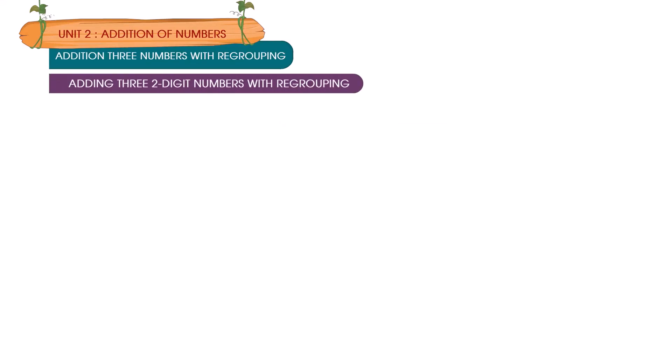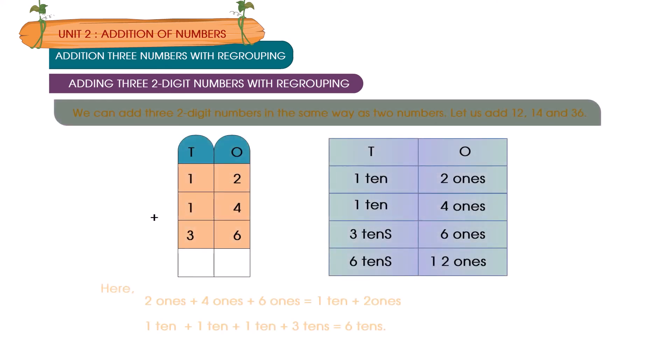Adding 3, 2-digit numbers with regrouping. We can add 3, 2-digit numbers in the same way as 2 numbers. Let us add 12, 14 and 36.